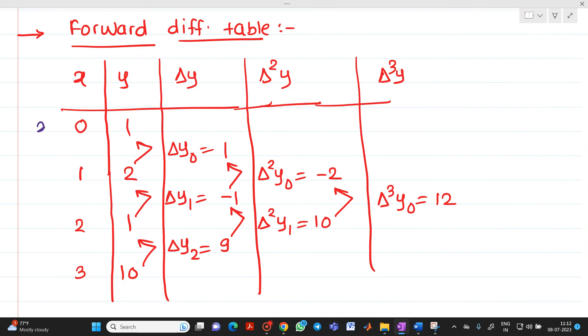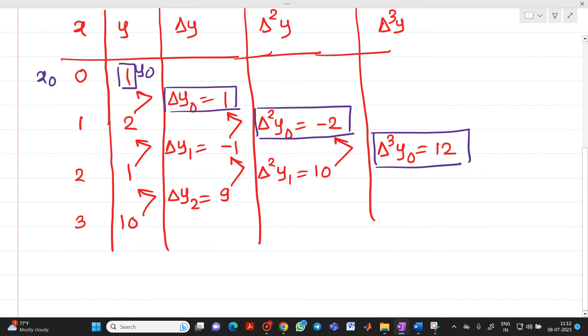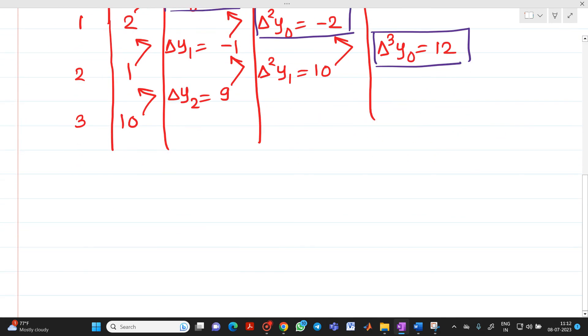This is your x0. So this will be your y0. So we require this value. We require this del y0 in the formula. Then del square y0 value is required and del cube y0 value is required in the formula. So as it is forward, therefore we are considering these values.